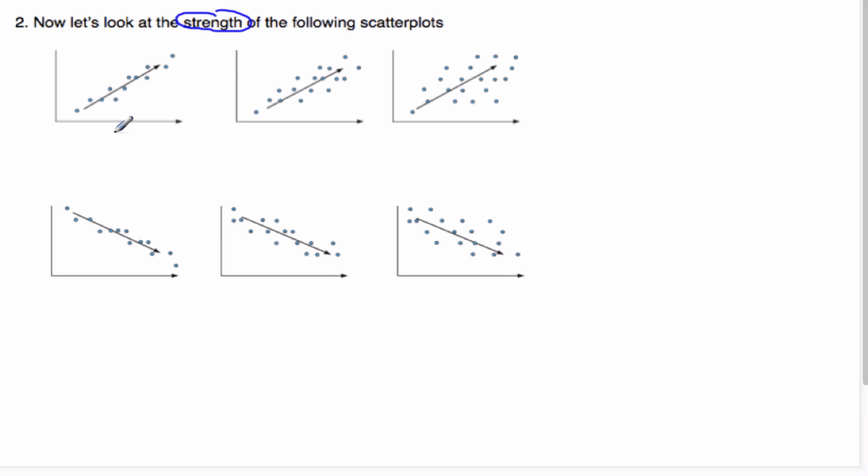If we look at these one, two, and three here, notice how closely the dots are here, versus they're a little bit more spread out here, and a little bit more spread out here. So this is the strength. This is strong, this is moderate, and this is weak.